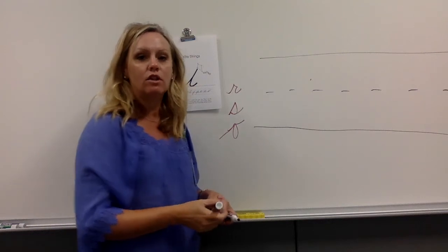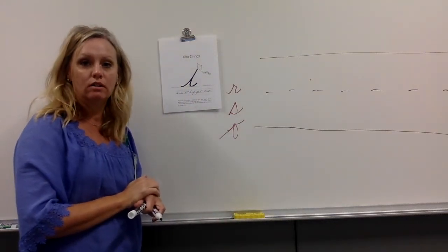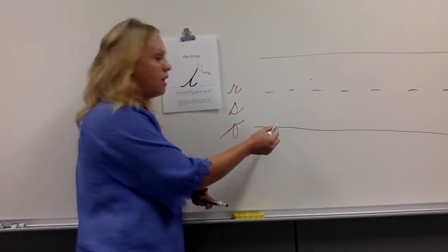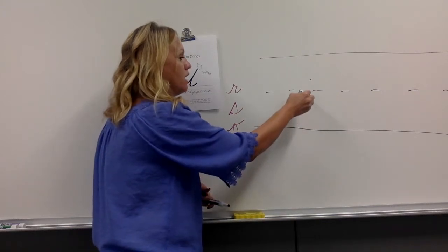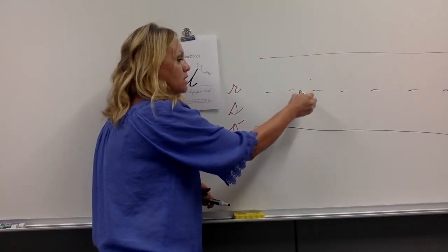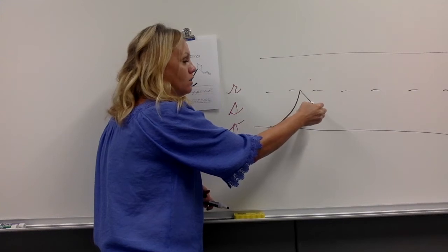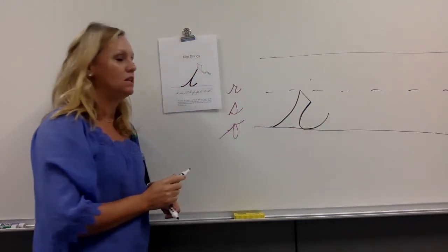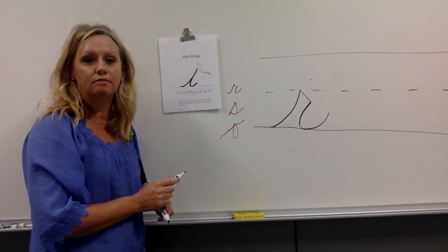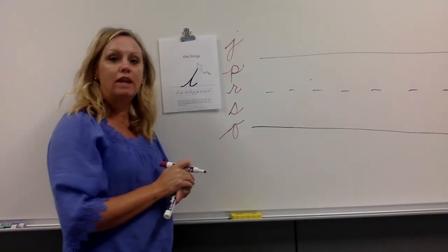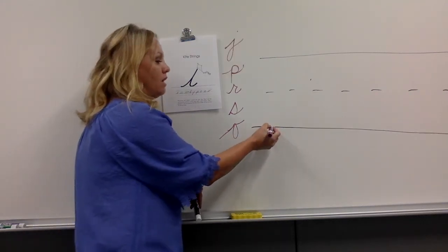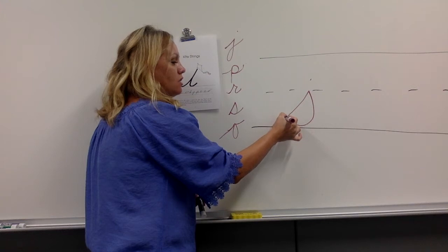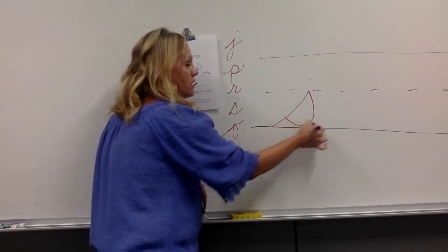Our next letter we're going to start with is lowercase R. Kite string letters start at your bottom writing line. All of our lowercase letters start at our bottom writing line. Kite string up to the middle divider. We're going to do a fat belly, touch the line you started on, retrace slightly, and release.